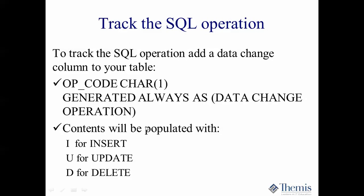The first one I want to talk about is the operation — I want to know what the operation was. IBM has added a generated always as data change operation. When you specify data change operation, you need to provide a one-character column for the operation to go into. I called mine opcode. If you perform an insert on that row, it will contain an I. If you perform an update, it will contain a U. And if you do a delete, the opcode is D.